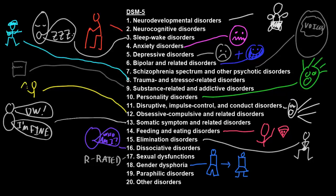The paraphilic disorders involve people that have distress or disability related to having sexual arousal to unusual stimuli or what would be considered unusual for that person's culture. Similarly to gender dysphoria, people that have sexual arousal to unusual stimuli do not have a mental disorder unless it causes distress or disability, or activities related to it could cause harm to another — particularly children or other people without sufficient decision-making capacity for proper consent.